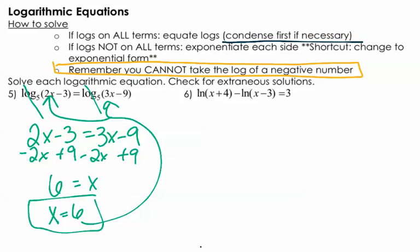Now, when we look at problem 6 here, we have natural log, natural log, no log. So that means we don't have a log in each term, so we have to do it a little bit different. We have to exponentiate each side.